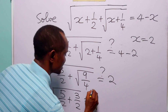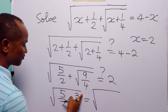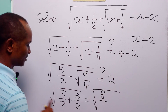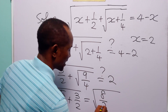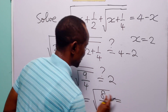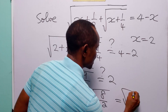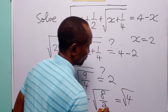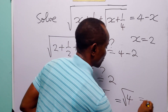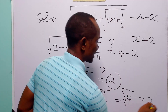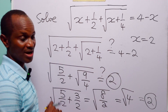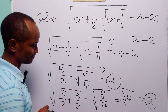This is the square root of 5/2, plus the square root of 9/4 which is 3/2. So we have the square root of (5 plus 3) over 2, which is the square root of 8/2, which is the square root of 4, equal to 2. So you can see that the left-hand side of the equation is equal to the right-hand side.